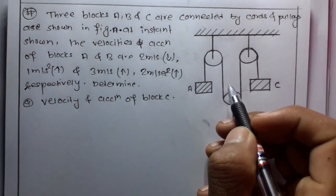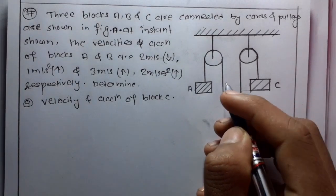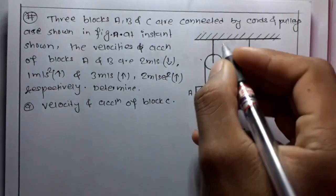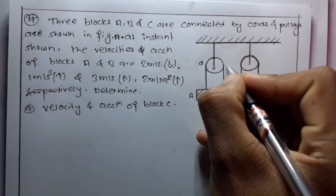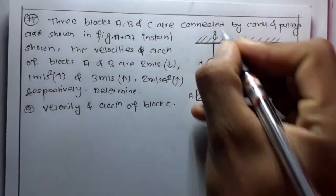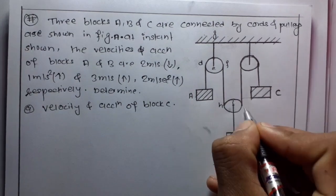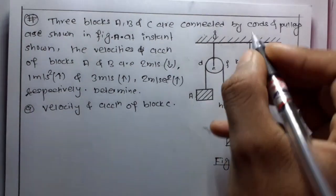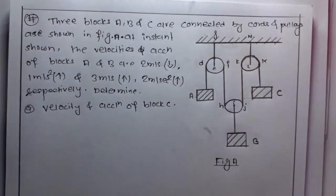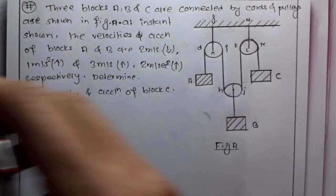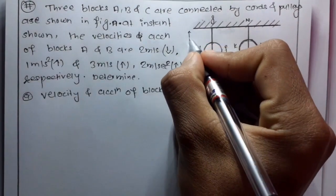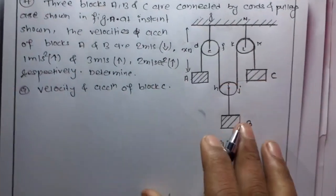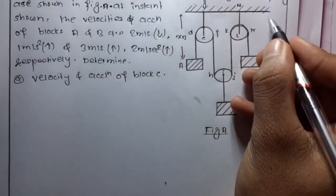To solve this type of question, first naming of each point is necessary. So the points are named A, B, C, D, E, F, G, H, I, J, K, L, M, N — naming is complete. Now let us assume this distance is XA and this distance is XC.